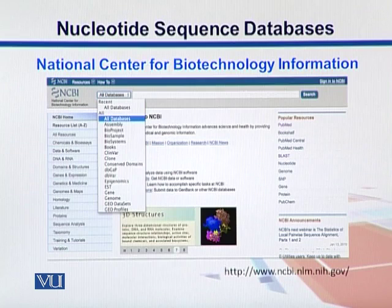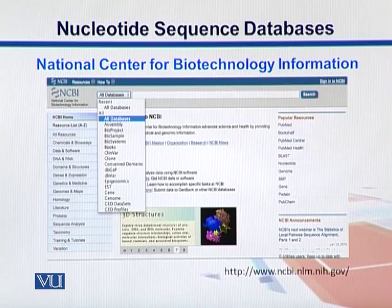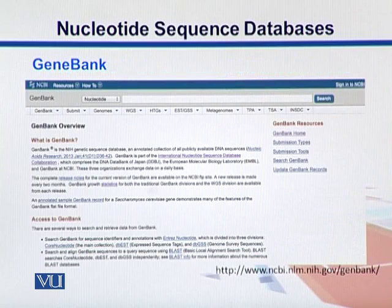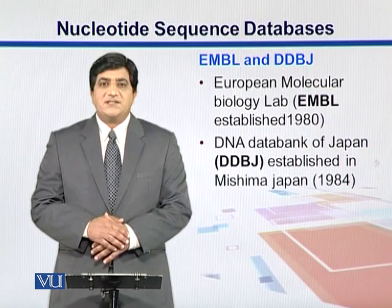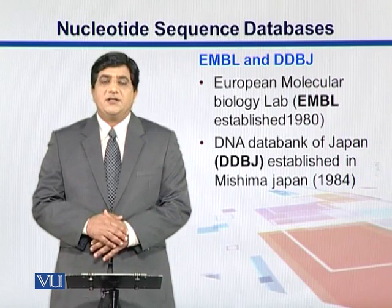In this diagram we see the NCBI page where you can search for any kind of data. There is a drop-down list that provides different options. Here is the page for GenBank, so if you want to look up nucleotides and genome sequences, this is the best resource.